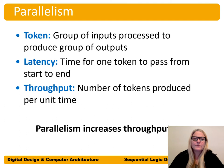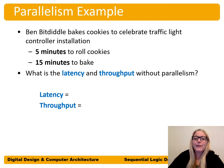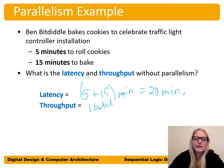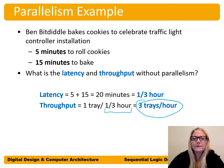Let's look at an example. Ben Bitdiddle wants to bake cookies to celebrate his traffic light controller installation. It takes five minutes to roll the cookies and 15 minutes to bake them. Without parallelism, latency is the time from starting to roll until the cookies are done: five plus 15 equals 20 minutes. Throughput is one tray every 20 minutes, or one tray every third of an hour — that's three trays per hour.